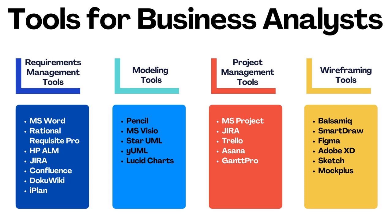Second, modeling tools include Pencil, MS Visio, StarUML, yUML, Lucidchart, and Axure. These tools enable a BA to simplify the building of system wireframes, flow and organizational charts, and process and network diagrams. Third, project management tools include Microsoft Project, Jira, Trello, Asana, and GanttPro. As a BA's activity often includes a project manager's scope of work, this software comes in handy. The most popular are Jira, Trello, and Asana, each allowing backlog formation, sprint planning, task allocation, and setting time limits.